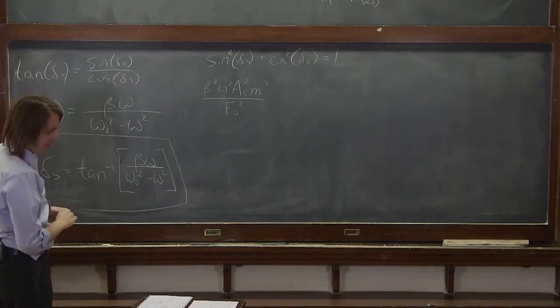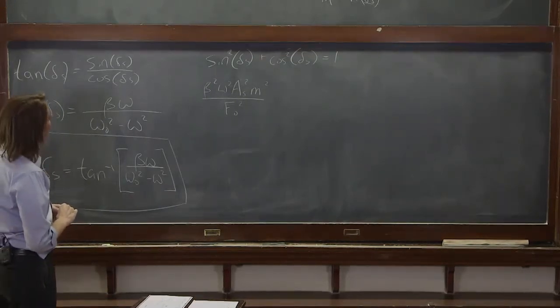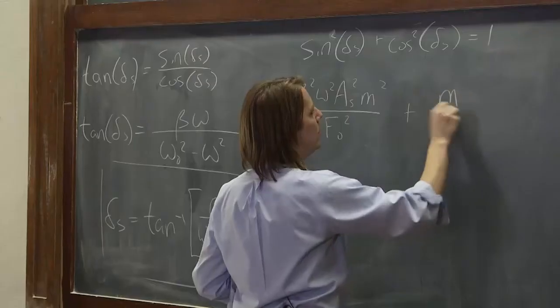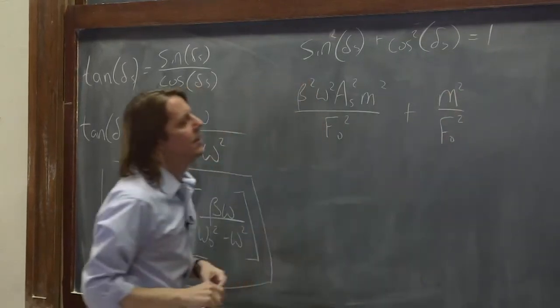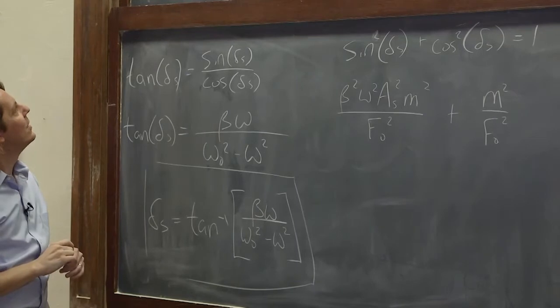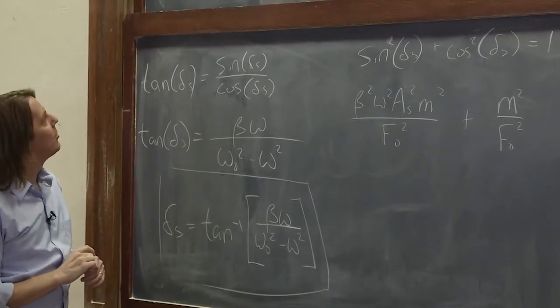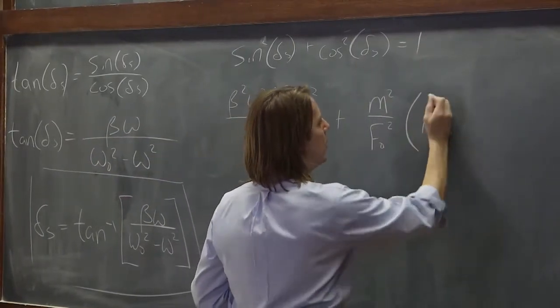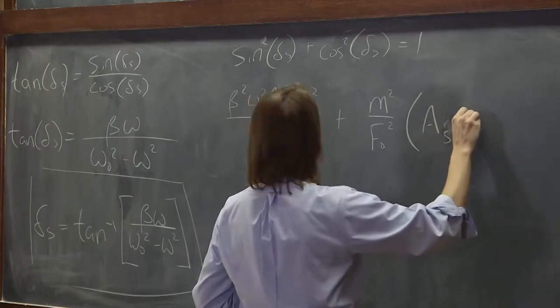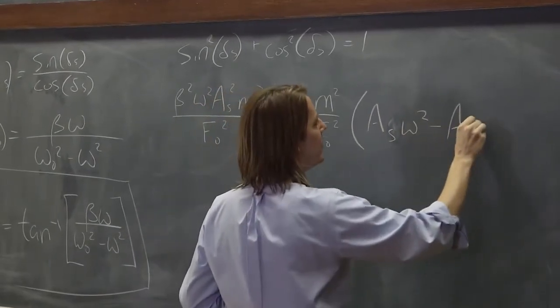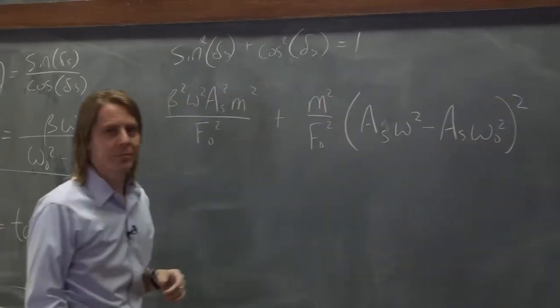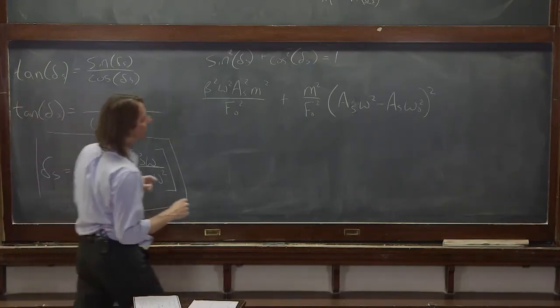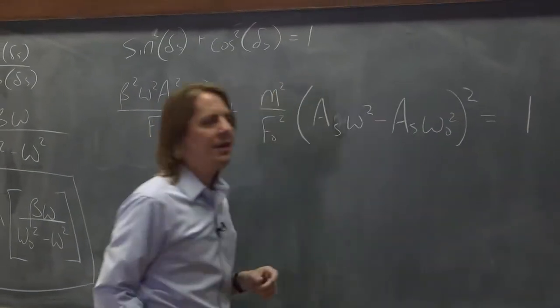So now the cosine is even worse. I think what I'm going to do is write the m over f naught kind of by itself. m squared over f naught squared and keep the other part a little bit separate. So it's going to be As times omega squared minus As times omega naught squared squared. So that is the cosine part squared. And that's all equal to what? It's all equal to 1.